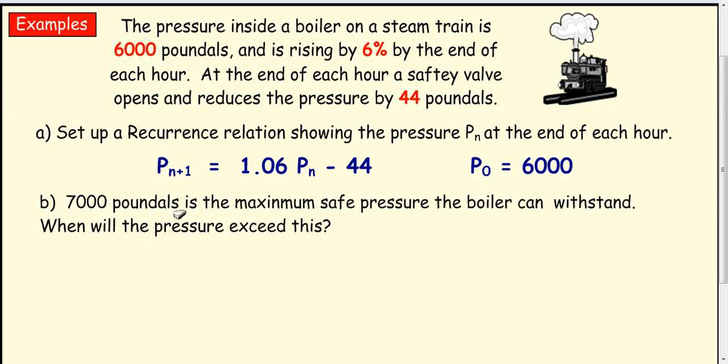7000 pounds is the maximum safe pressure the boiler can withstand. When will the pressure exceed this? So we need to go round this loop and see when we get bigger than 7000.